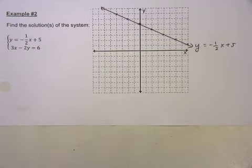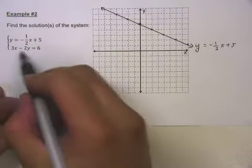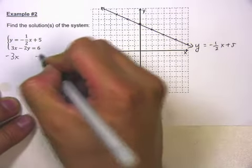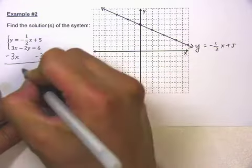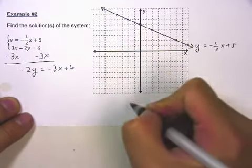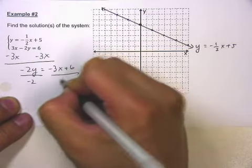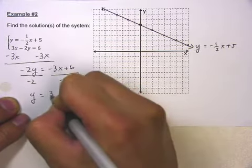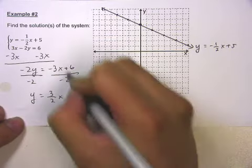And then let's go ahead and graph the second one. For the second one, let's get this into slope-intercept form. So I'm going to subtract 3x from both sides. I have negative 2y equals negative 3x plus 6. And then I'm going to divide both sides by negative 2. I get y equals positive three-halves x minus 3.